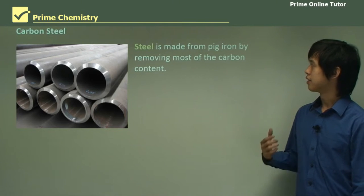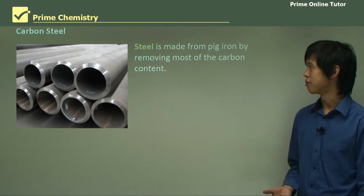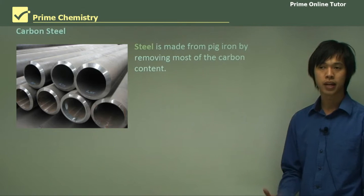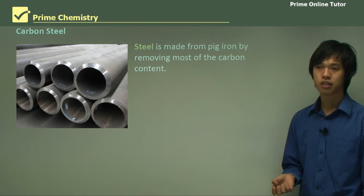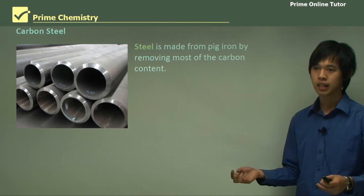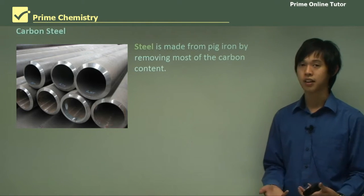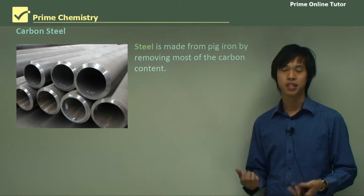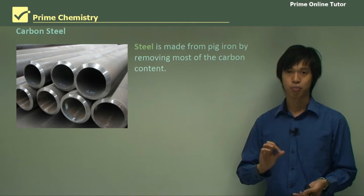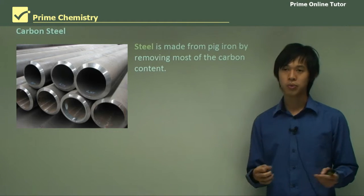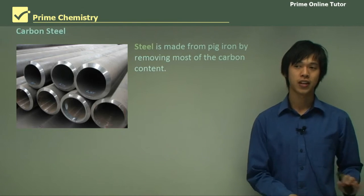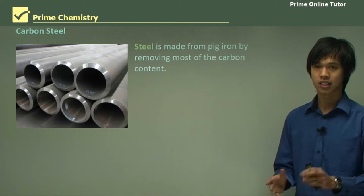Carbon steels are made from pig iron by removing most of the carbon content. When we use the blast furnace, we use carbon to help remove some of the oxygen, and carbon gets ingrained in the iron — that's what we call pig iron, when there's really high carbon content. The high carbon content makes it very brittle and hard, so we want to remove some of that carbon to get the malleable steel we're used to.